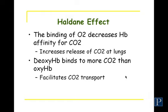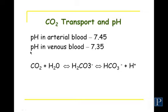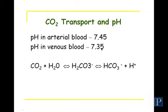When looking at CO2 transport in the blood, because carbon dioxide combines with water to form carbonic acid, which dissociates into bicarbonate and hydrogen ions, venous blood has a lower pH than arterial blood. This difference comes down to CO2 transport: when CO2 combines with water and eventually becomes bicarbonate, it releases hydrogen ions, which lowers the pH.